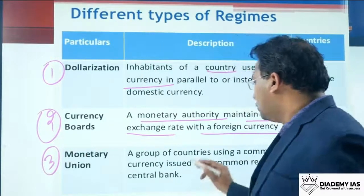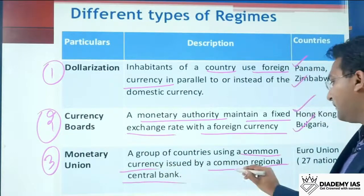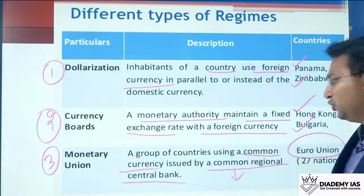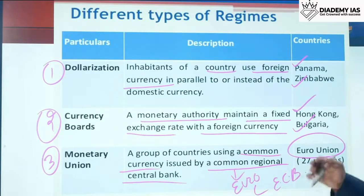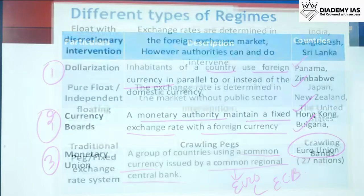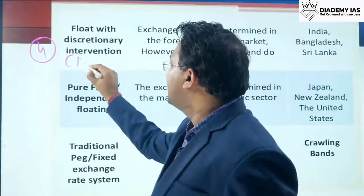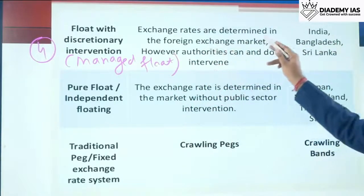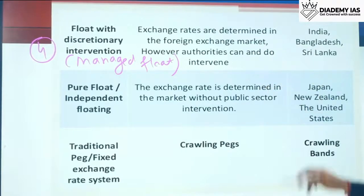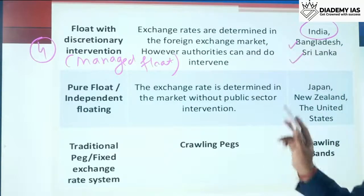Third is monetary union: a group of countries using a common currency issued by a common regional central bank. For example, the European Union uses the Euro, issued by the European Central Bank (ECB). Fourth is float with discretionary intervention — this is essentially managed float, where exchange rates are determined in the foreign exchange market but authorities can and do intervene. India, Bangladesh, and Sri Lanka follow the managed float system.